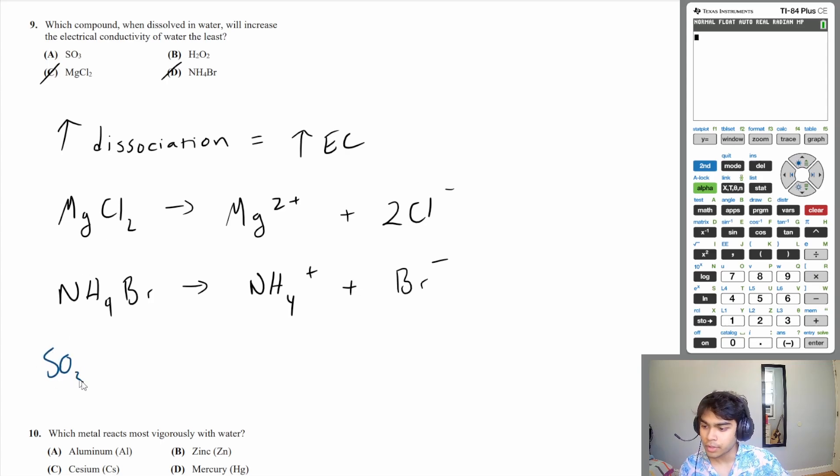So the two that we have left is SO3 and H2O2. SO3, when it reacts with water, is going to produce H2SO4, which is sulfuric acid. And sulfuric acid is a very strong acid. So it's going to dissociate a lot. And when it dissociates into its ions, it's going to increase the electrical conductivity a lot. So A cannot be it. Therefore, hydrogen peroxide H2O2 has to be our answer. And that makes sense because hydrogen peroxide is very well known as a very, very weak acid. So it's not going to increase the electrical conductivity a lot. So our answer is answer choice B.